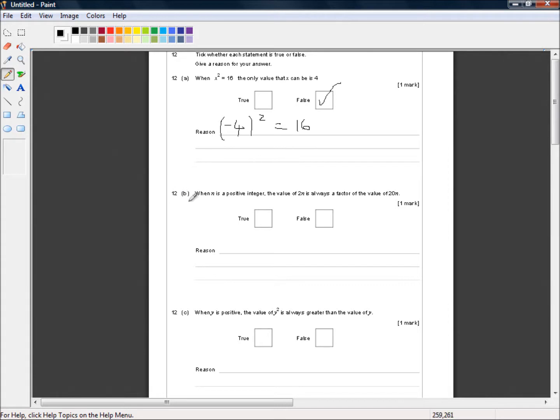12b: When n is a positive integer, the value of 2n is always a factor of the value of 20n. That's obviously true.